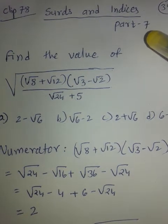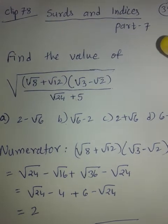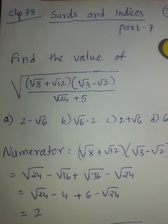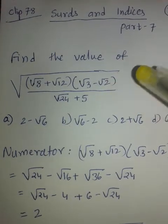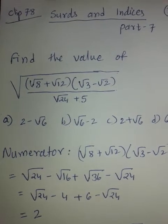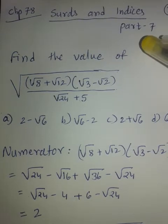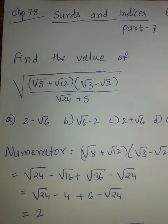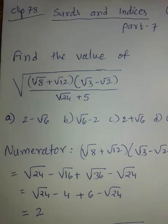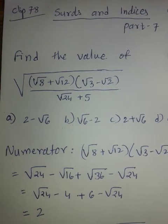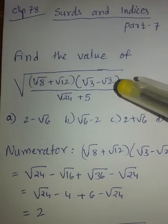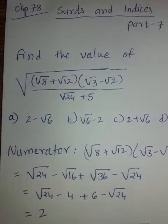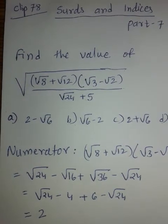In part 5 and part 6 we learned rationalization of surds as well as the shortcut for finding the square root. Before solving these advanced level sums, I would advise you to watch part 5 and part 6 first, because rationalization and finding square roots are going to be needed in today's part. So let's begin solving these advanced level examples.